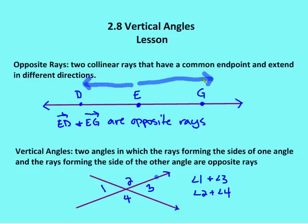So again, two collinear rays on the same line that have a common endpoint, E, and extend in different directions — one to the left of the page and the other to the right. So ED and EG are opposite rays.